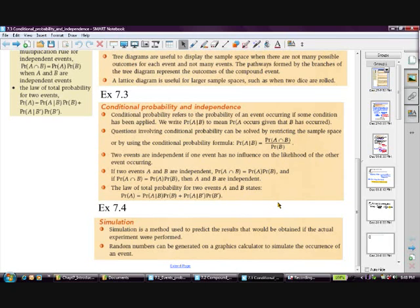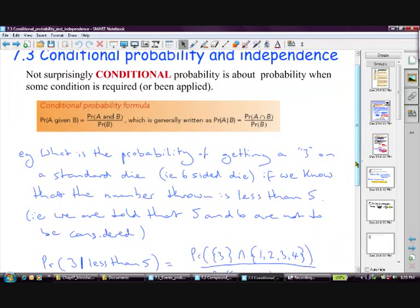Two things which don't in any way overlap with each other. Well we'll look at that the way that that works. So conditional probability and independence.